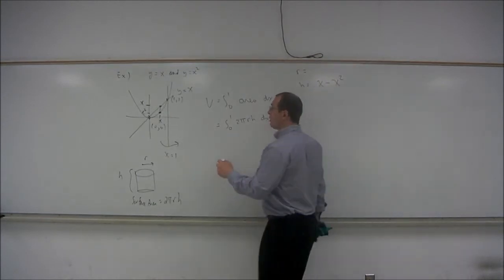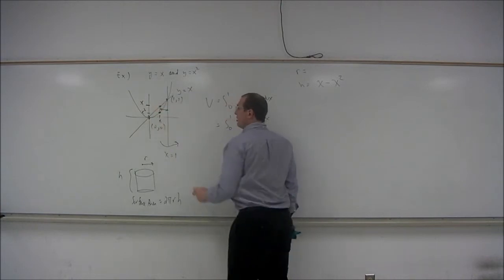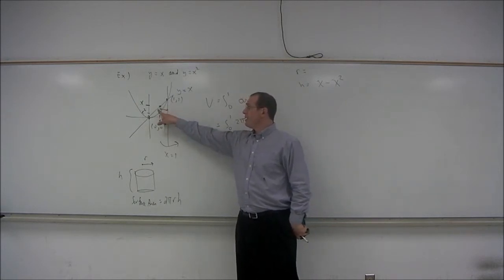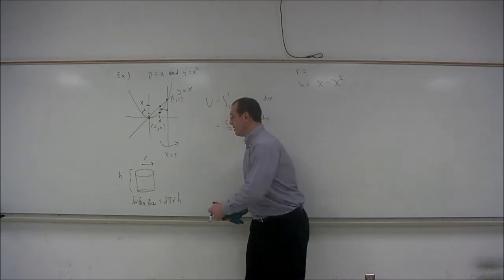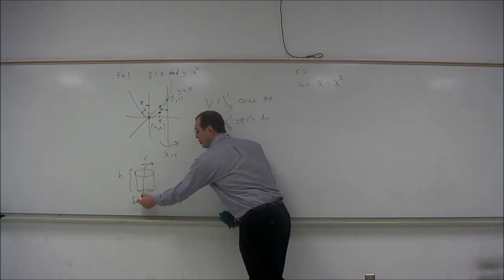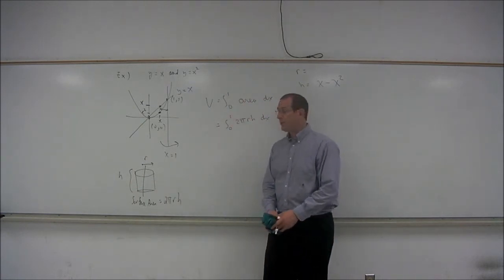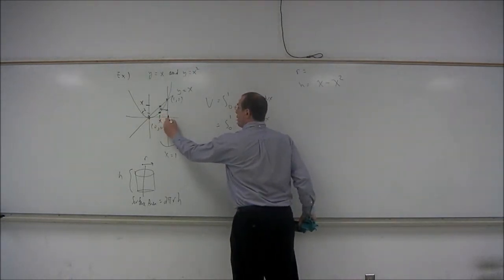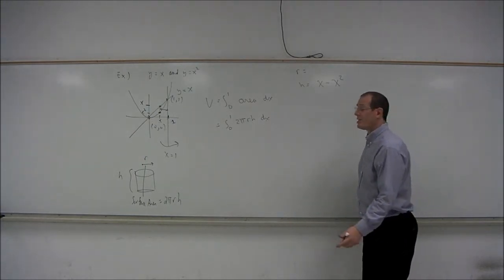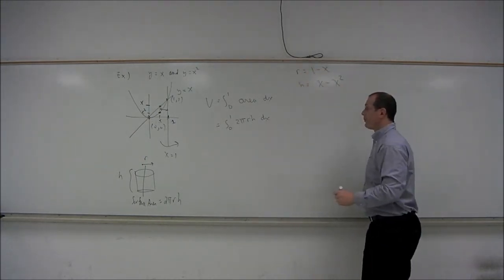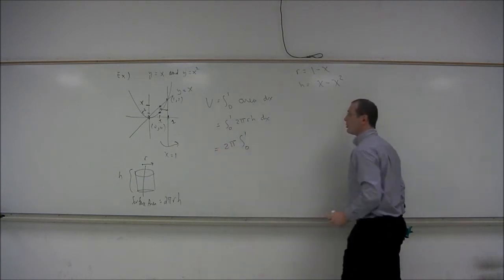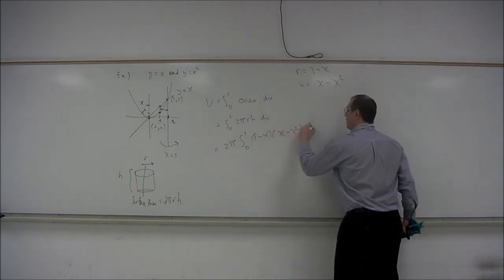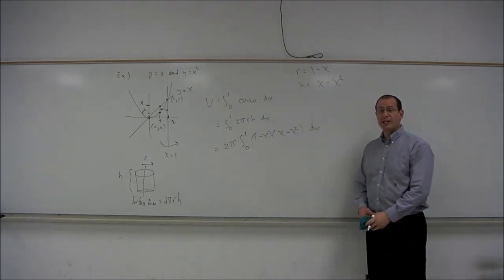The radius comes from the horizontal distance between the vertical slice and the axis of revolution. The axis of revolution runs down the middle of the cylinder. The x value at the line is 1 and the x value of the slice is x, so the radius is 1 minus x. The integral boils down to 2 pi times the integral from 0 to 1 of (1 minus x) times (x minus x squared) dx.